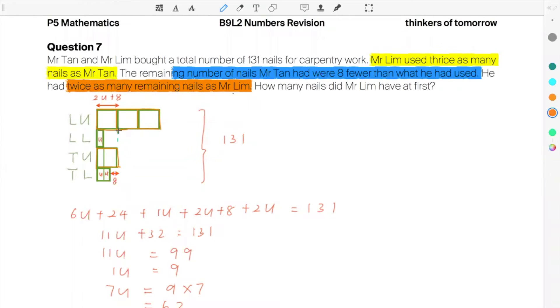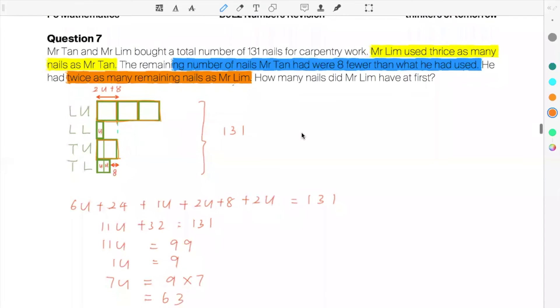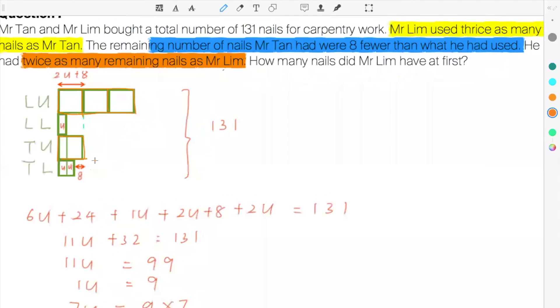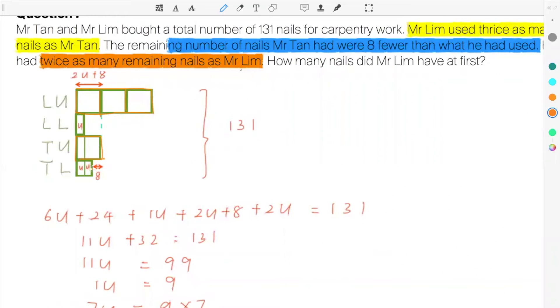Now let's look at the highlighted blue. The remaining number of nails that Mr. Tan had were 8 fewer than what he had used. So what Mr. Tan left is 8 fewer. So can you see the model here? It's shorter, it's smaller by 8. That's for Mr. Tan.